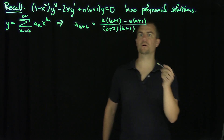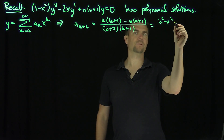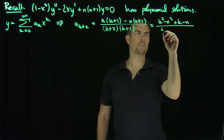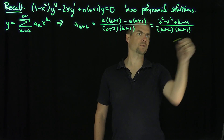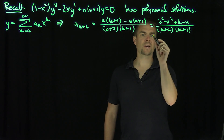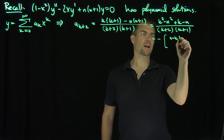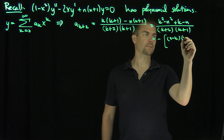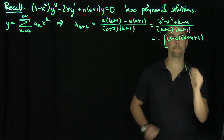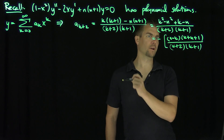Let's do a little bit of algebra on top. We're going to have k² minus n², and then k minus n. So then (k minus n) divided by (k+2)(k+1). And then this is going to be (k minus n)(k plus n), and factoring out negative signs, it's going to be negative (n minus k)(n + k + 1), all divided by (k+2)(k+1).